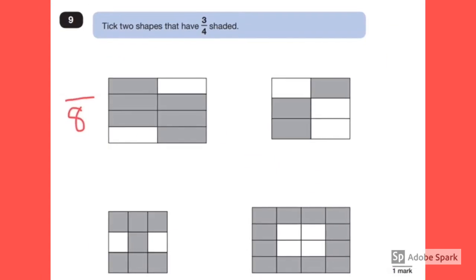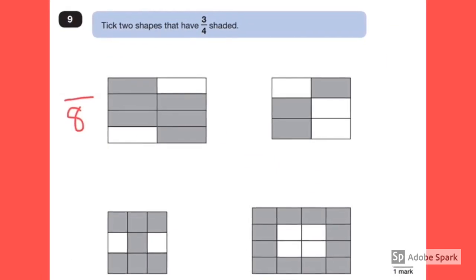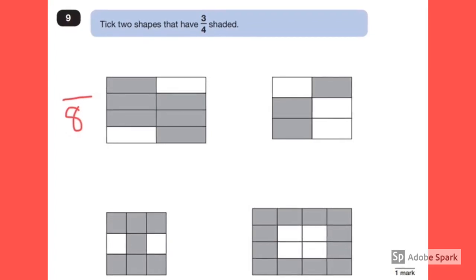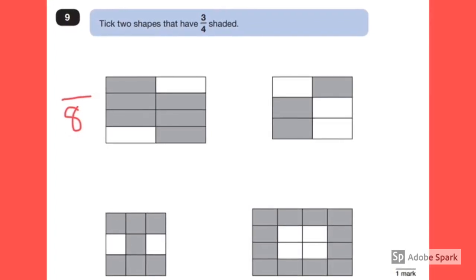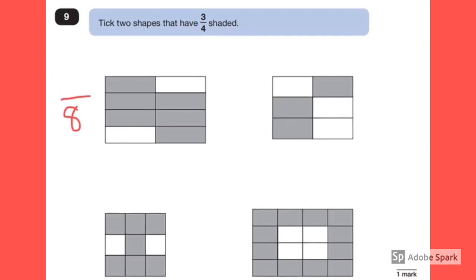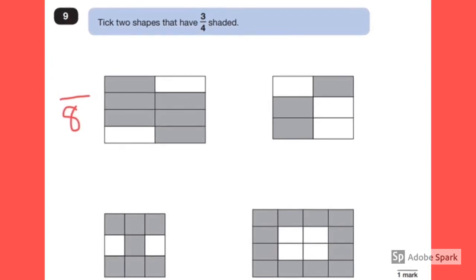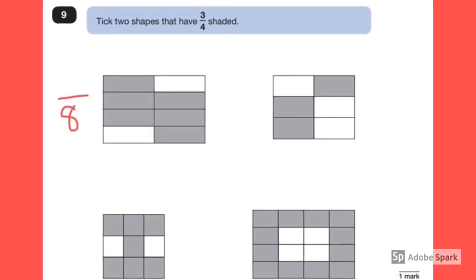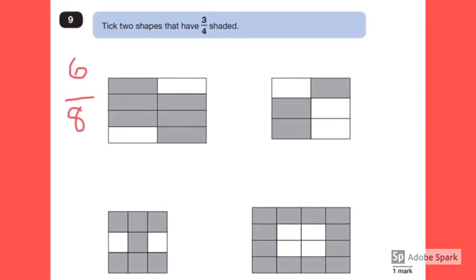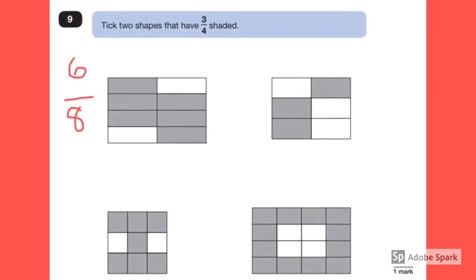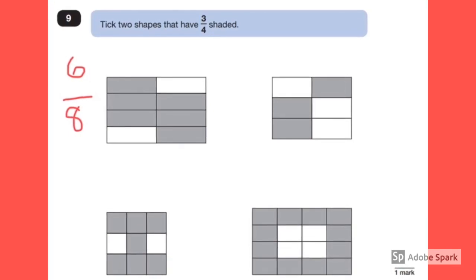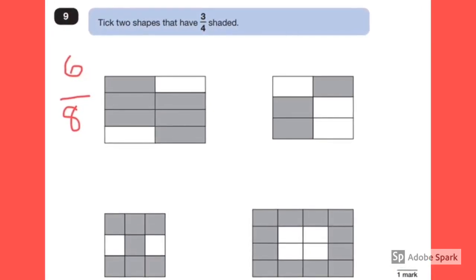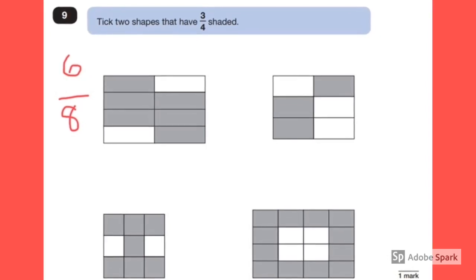The first thing I would do is find out what fraction of each shape is shaded, and then find out if any of them are equivalent to three quarters. If we look at the first shape, it has a denominator of eight, because the shape is split into eight equal pieces. To find the numerator we find out how many have been coloured in, so in this shape it is six, making the fraction six eighths.